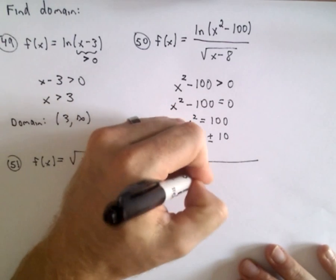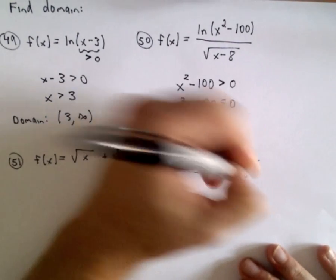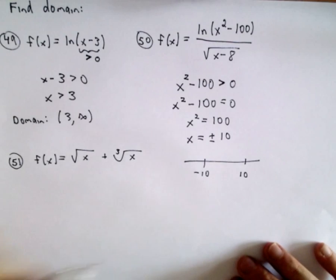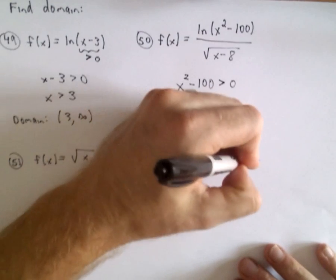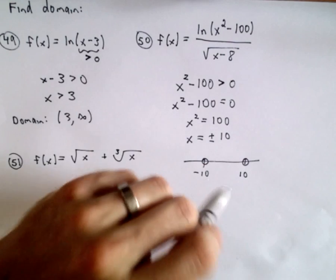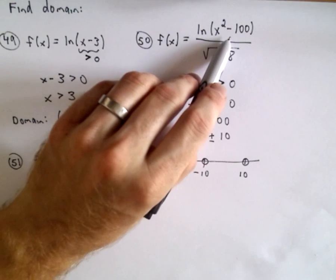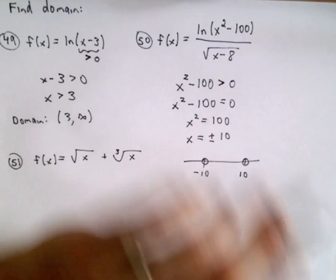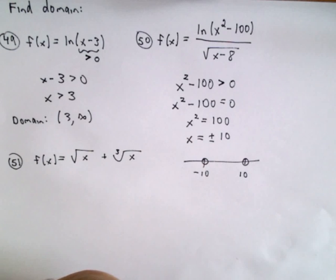And this is where we have to take the number line and test stuff from the number line. So again, I know that negative 10 won't work and positive 10 won't work because that will give me the natural logarithm of zero if I substitute either of those values in, and that's undefined.